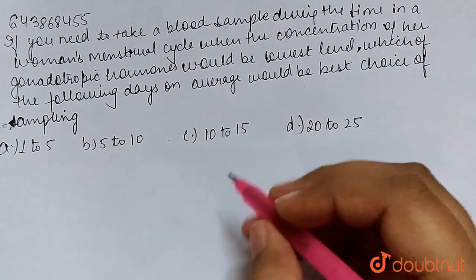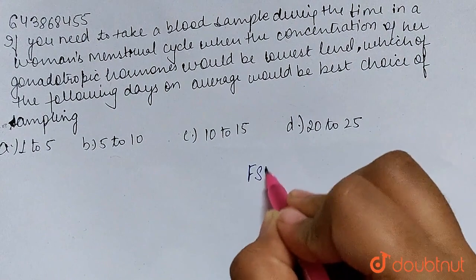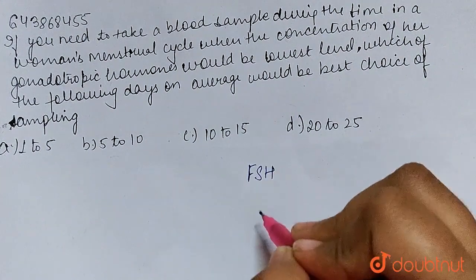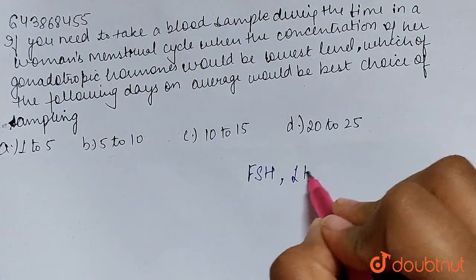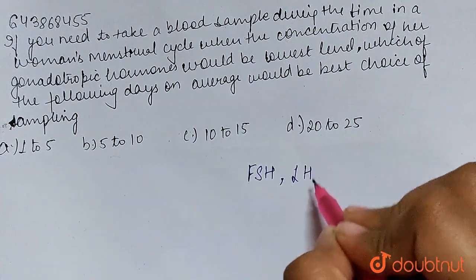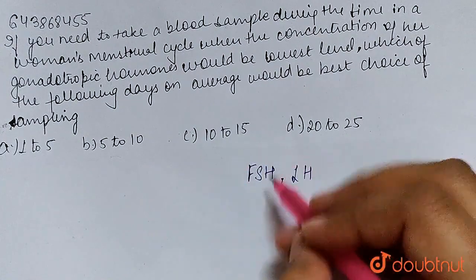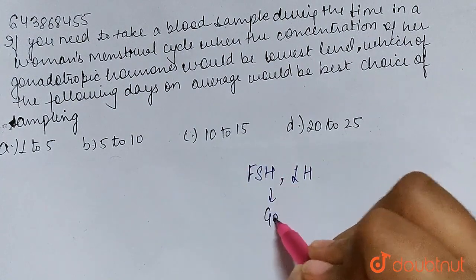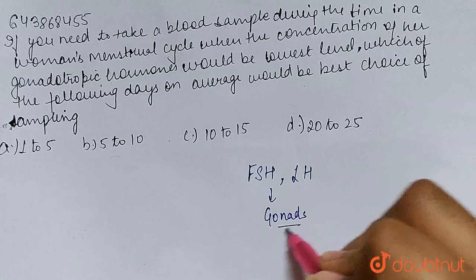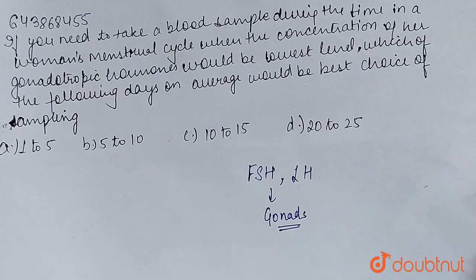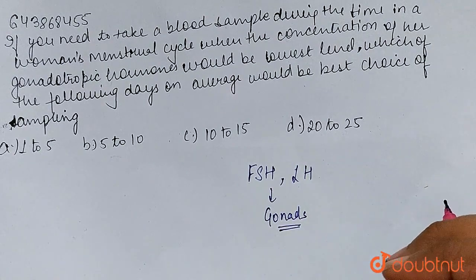This is FSH — that is Follicular Stimulating Hormone — and LH, that is Luteinizing Hormone. These hormones basically act on gonads or other sex glands and influence their function.